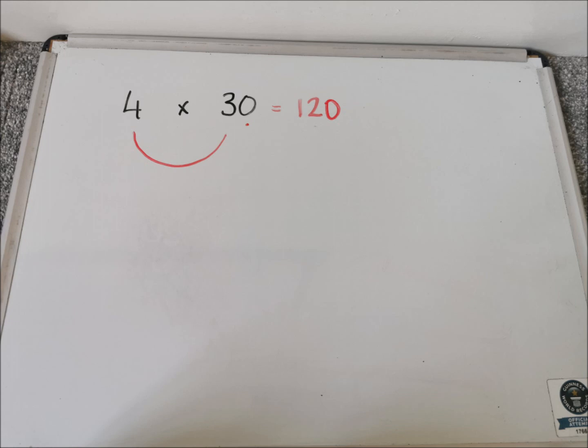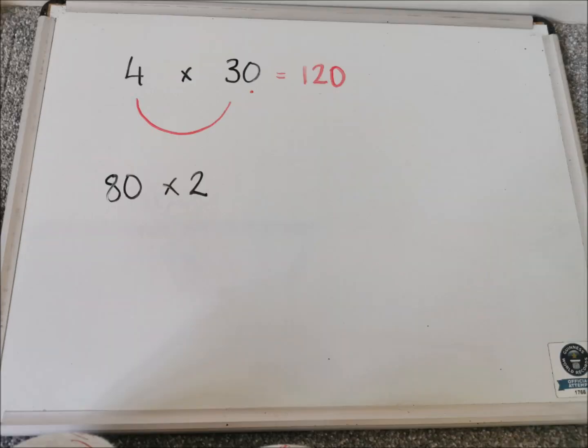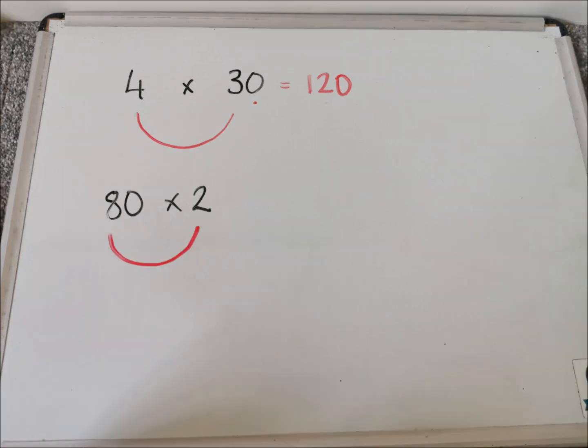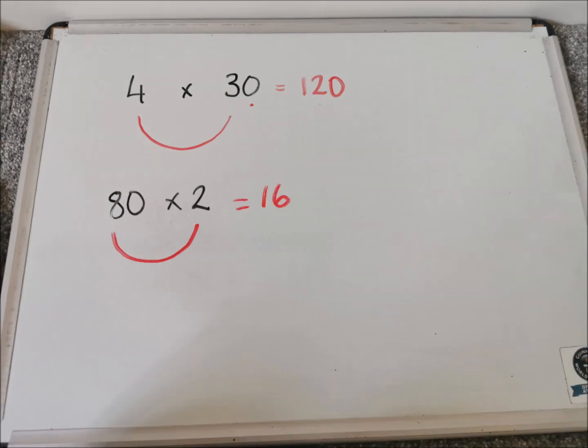Let's have a look at another example because that was quite quick. So let's imagine we have got 80 times 2. Again, we could do a chimney sum for this. But let's have a look at how we would do the SMILE multiplication method. So we draw a smile underneath the 8 and the 2. And we do 8 times 2. So hopefully you know that that's 16.